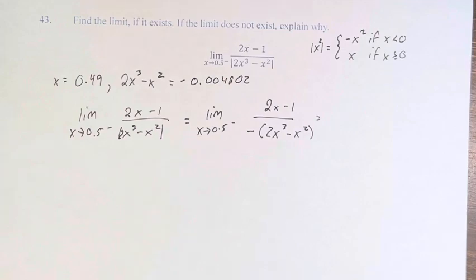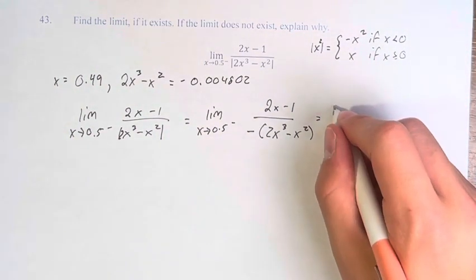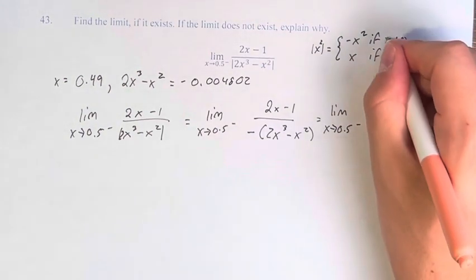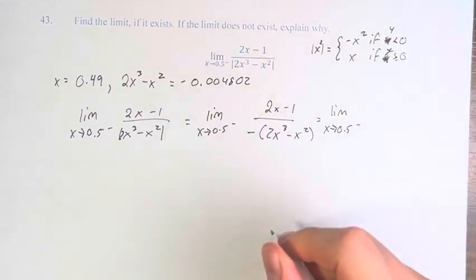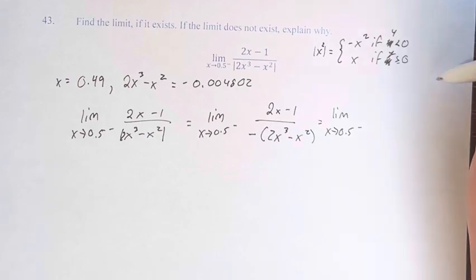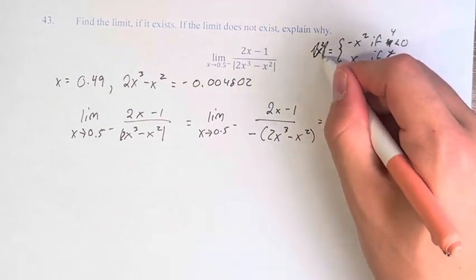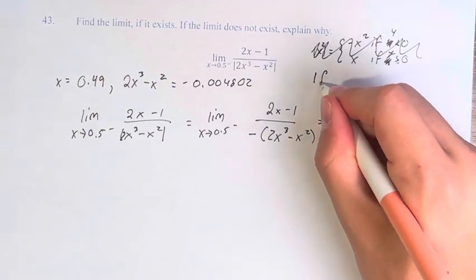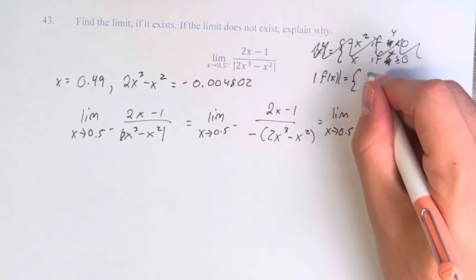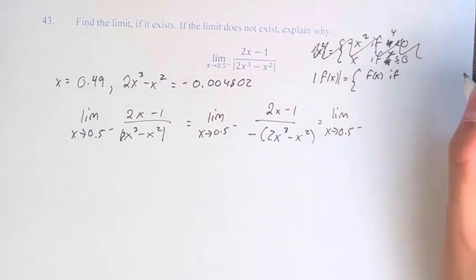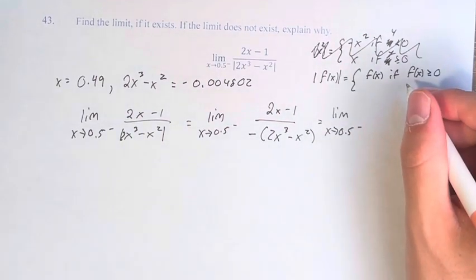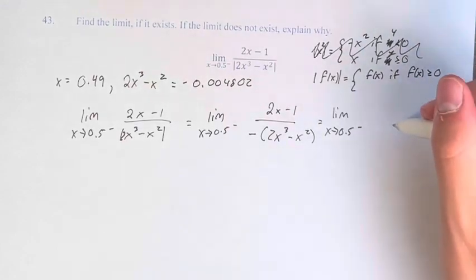Therefore, we can say that the limit as x approaches 0.5 from the left, and I'm also realizing this should be y, it's the actual value of the thing that's being put out. So I'll clarify this because it's a little unclear. The absolute value of some function is equal to that function if the function is greater than or equal to 0. Not if x is greater than or equal to 0.